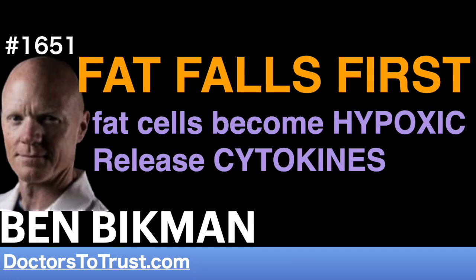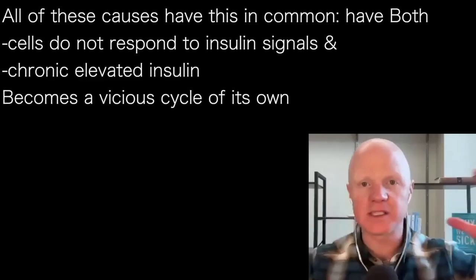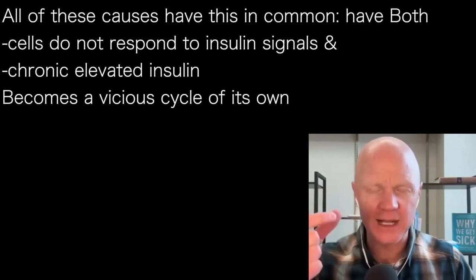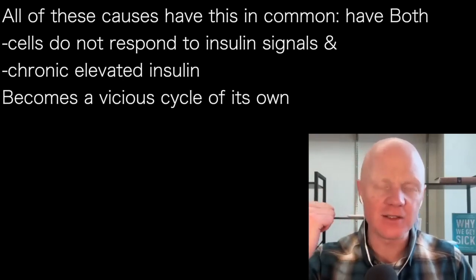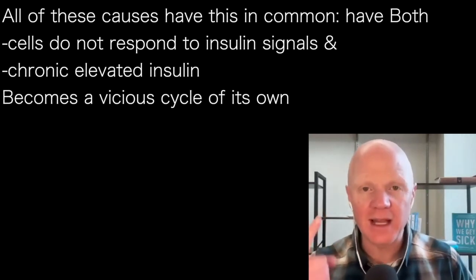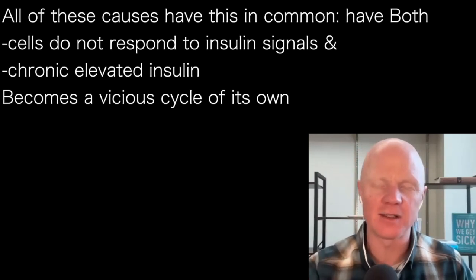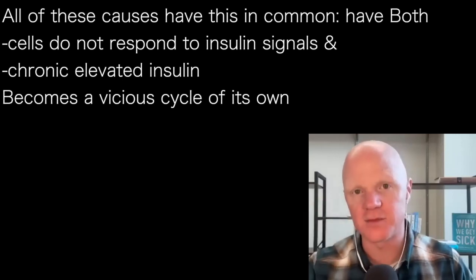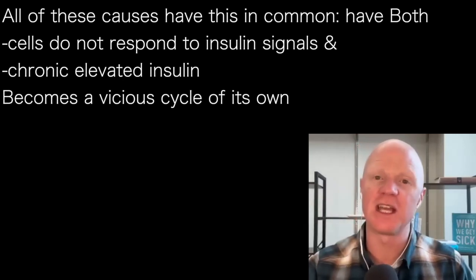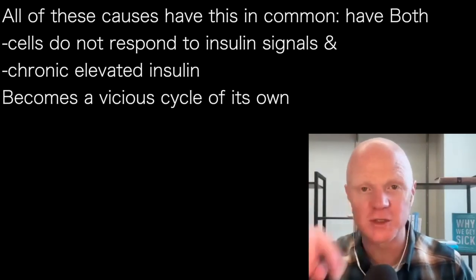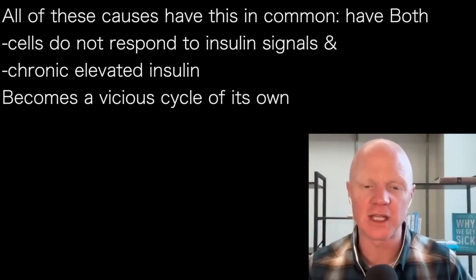What all of these have in common is that they will manifest with all the signs of insulin resistance. There are two real aspects — the coin analogy, where cells aren't responding well to insulin. And in the whole body, insulin levels will be elevated, which makes elevated insulin a cause of insulin resistance particularly vicious. Because if elevated insulin causes insulin resistance, which then causes more elevated insulin, which contributes to further insulin resistance, you can see how this becomes a positive feedback and a vicious cycle.